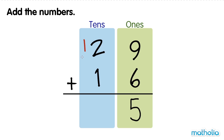Now let's add the tens. 1 ten plus 2 tens plus 1 ten equals 4 tens. 29 plus 16 equals 45.